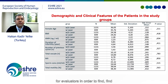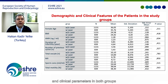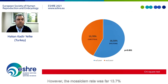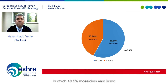In order to identify any confounding factors, we evaluated the main demographics and clinical parameters in both groups, and found no statistical difference. However, the mosaicism rate was 13.7% in the without-laser group, which is statistically lower than the laser group, in which 18.5% mosaicism was found.